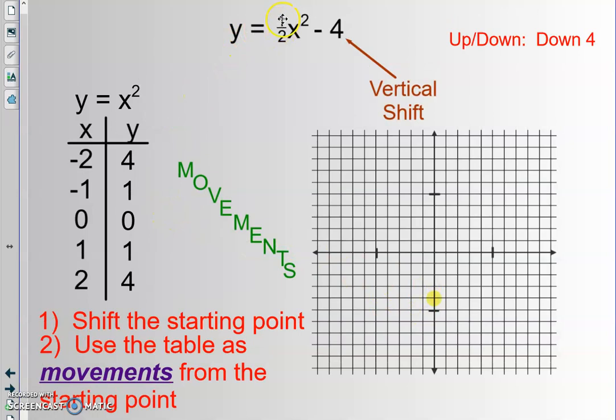And then the second thing we do is we make our x, y table of the stripped down parent function. This is just a quadratic y equals x squared. But instead of thinking of these as points, I want you to think of these things as movements from your original starting point. Now, we do have a scalar here, this one-half. This one-half affects the y. So instead of a 4, we'll have a 2. 1 becomes a half, 0 doesn't change, 1 becomes a half, and 4 becomes 2.